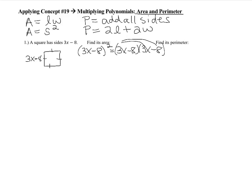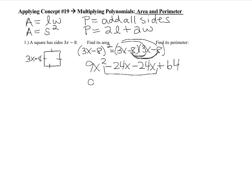Using FOIL: 3x times 3x is 9x squared; 3x times negative 8 is negative 24x; negative 8 times 3x is negative 24x; and negative 8 times negative 8 is positive 64. The middle terms are like terms, so combining coefficients gives 9x squared minus 48x plus 64.